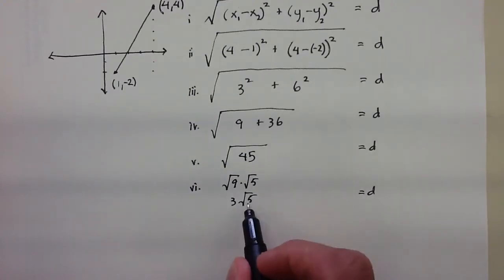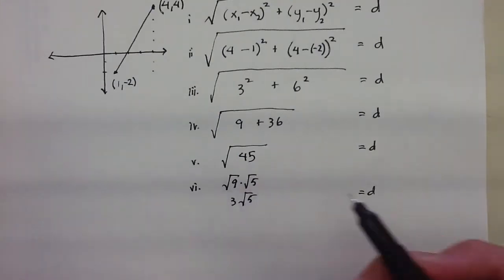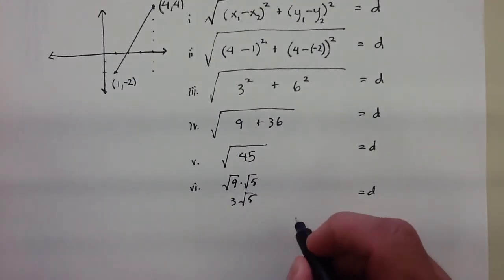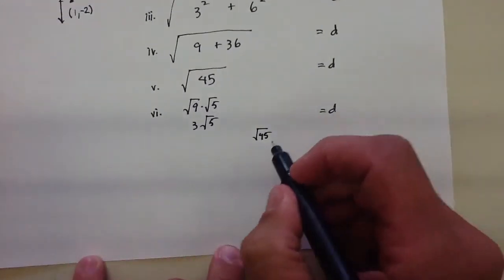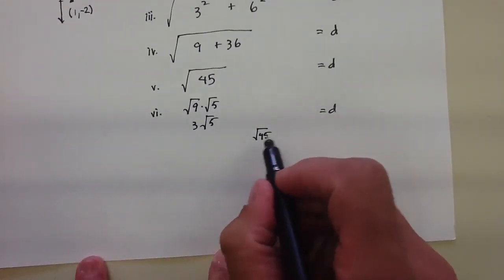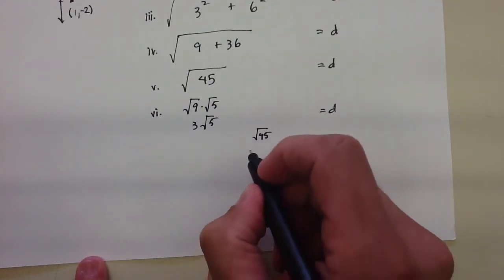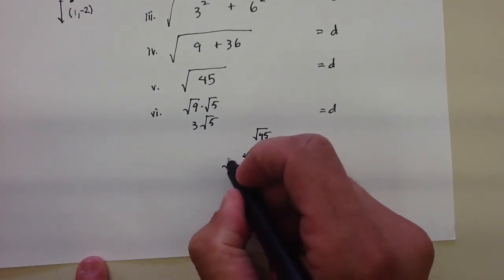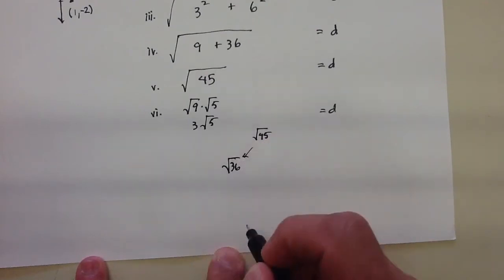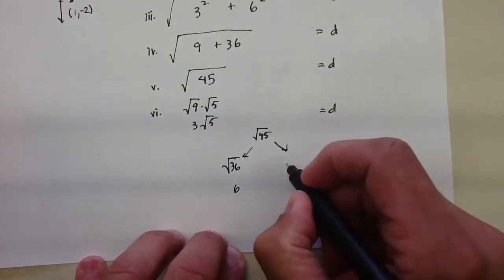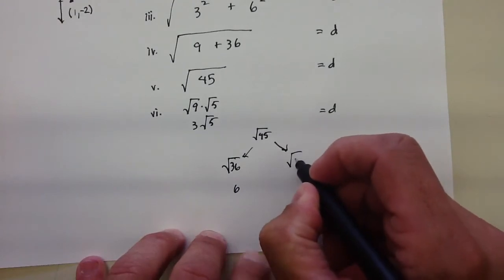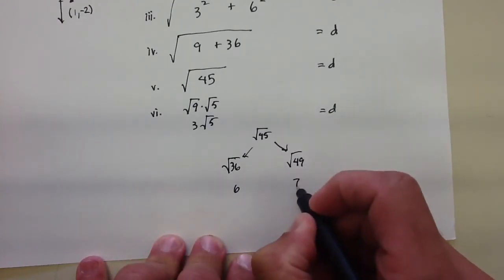The other way of doing this is you'd have to estimate what the square root of 45 is, and I'll show you a really cool technique. Here's 45, and what I do is I ask myself, what are the two perfect squares on either side of 45? Well, I know that one perfect square is the square root of 36, and that would just be 6. I know the other perfect square is the square root of 49, and that's just 7.